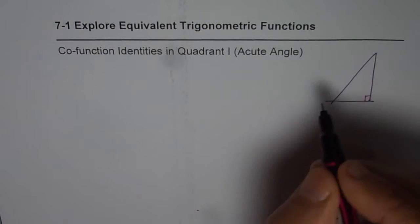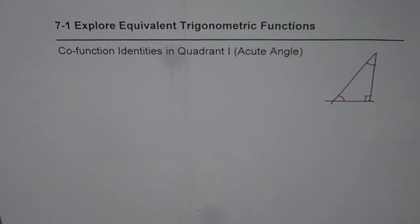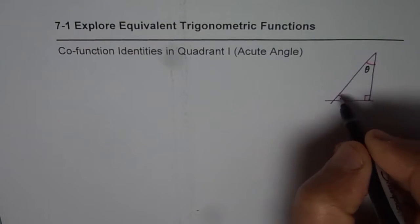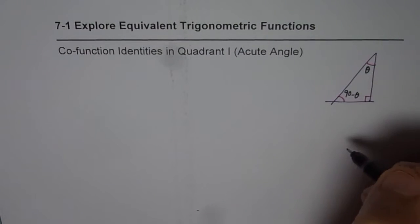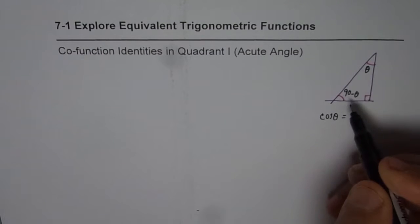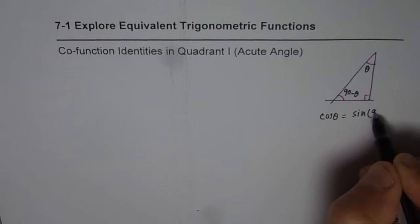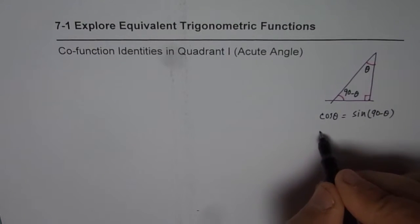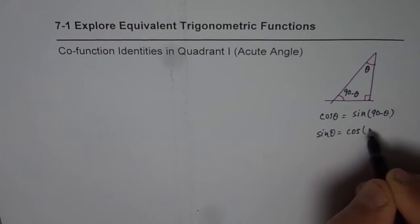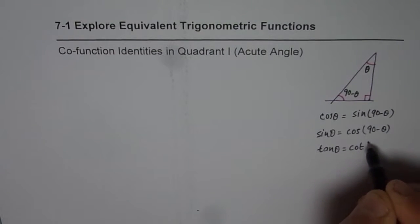When we say co-function identities, we are trying to relate trigonometric ratios in a triangle with respect to two of its angles. In a right triangle, if one angle is theta, then the other will be 90 minus theta. So cos of theta will be equal to sine of 90 minus theta, and sine of theta will be equal to cos of 90 minus theta.